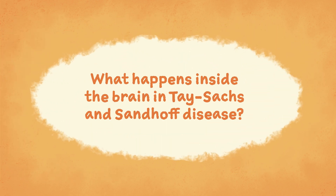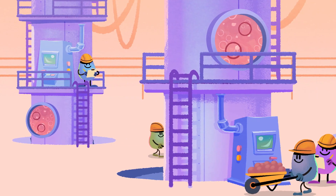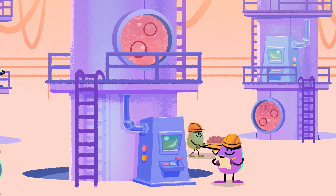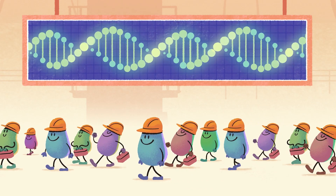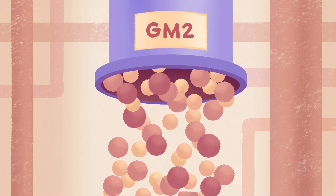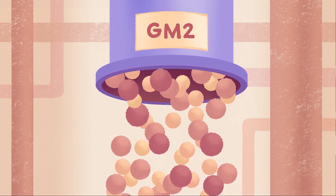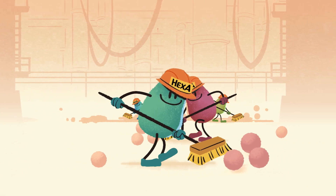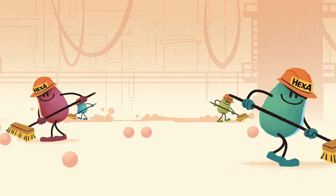In someone not affected by Tay-Sachs or Sandhoff, the cells of the brain work like a factory. The genes instruct how many workers there need to be and what their jobs are. When the factory is working efficiently, it produces a molecule called GM2, which helps the brain work efficiently. Once GM2 has done its job, it is then sorted and removed by a group of factory workers called Hex-A.